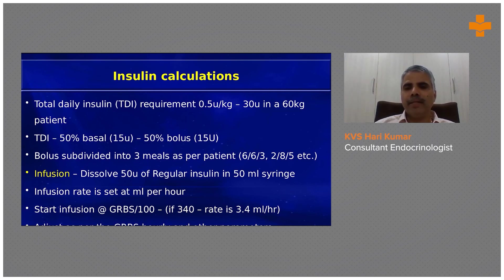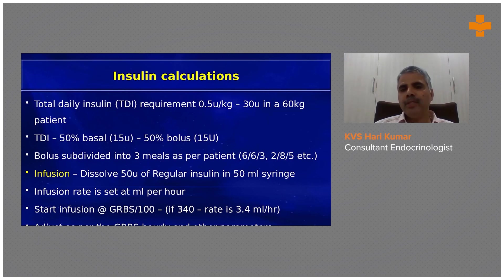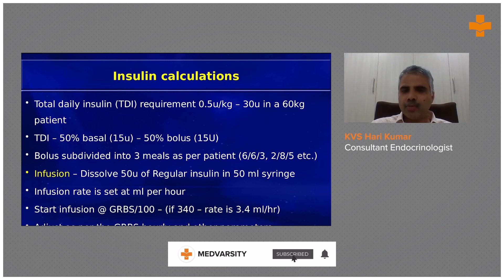The insulin requirement is between 0.5 to 0.7 units per kg per day. Taking 60 kg as an average weight and starting from the lower border of 0.5 units/kg, the patient requires about 30 units per day. Of those 30 units, half — 15 units — is basal, and half — 15 units — is bolus, subdivided into 3 meals. For a major breakfast meal you might give 8 units and lower doses for other meals, splitting bolus dosages as per the patient.